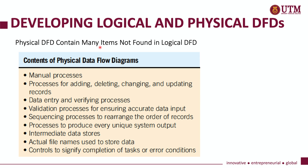There are many items in a physical DFD not found in a logical DFD. We should show any manual processes involved, and provide specific detailed processes for adding, deleting, changing, and updating records. It should also show specific processes for data entry and verification — including validation processes to ensure accurate data input. Physical DFD should also show sequencing processes to maintain the correct order of records, and indicate whether the process produces unique system outputs or any temporary data stores that need to be created.